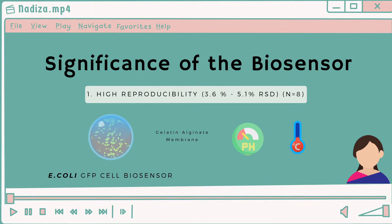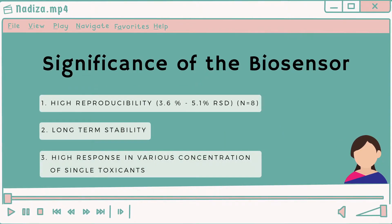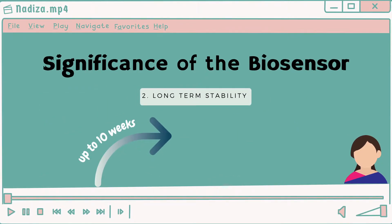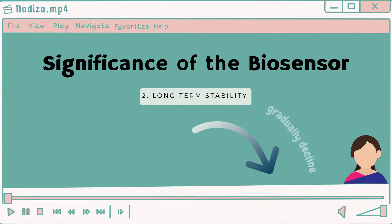Besides that, it has long-term stability. The long-term stability profile of immobilized GFP E. coli is demonstrated to be over 10 weeks. It maintains 100% stability for the first 3 weeks and gradually declines. By week 10, it loses 80% of the initial response due to the death of the immobilized bacteria.